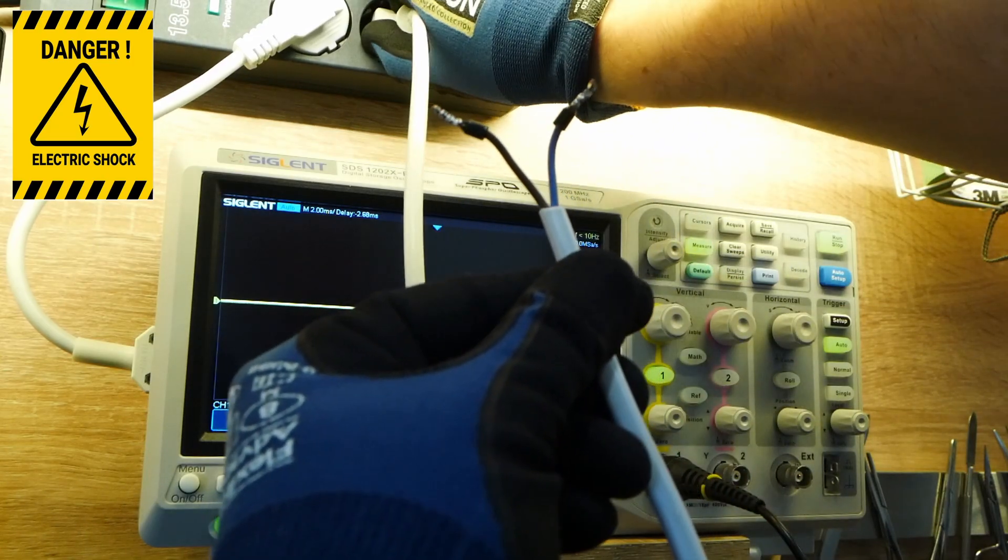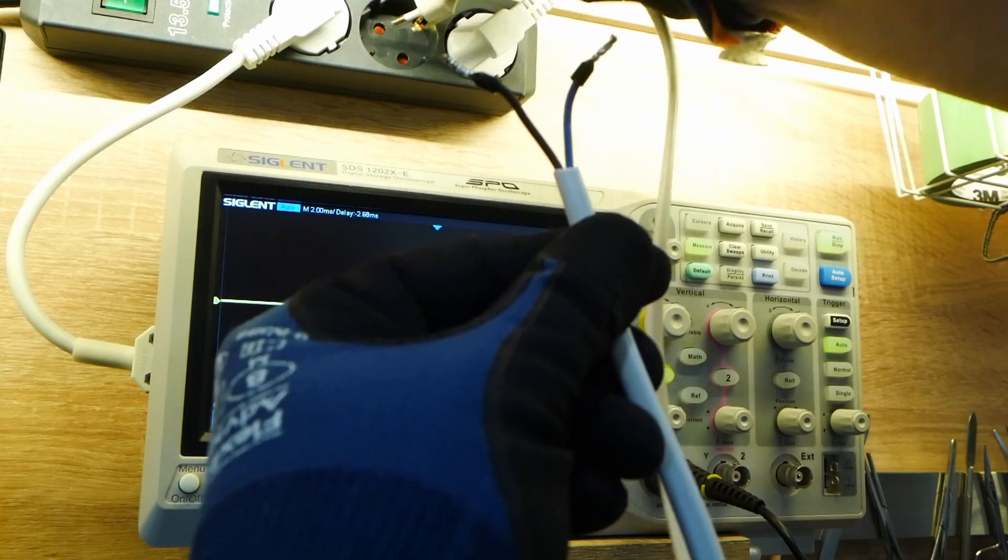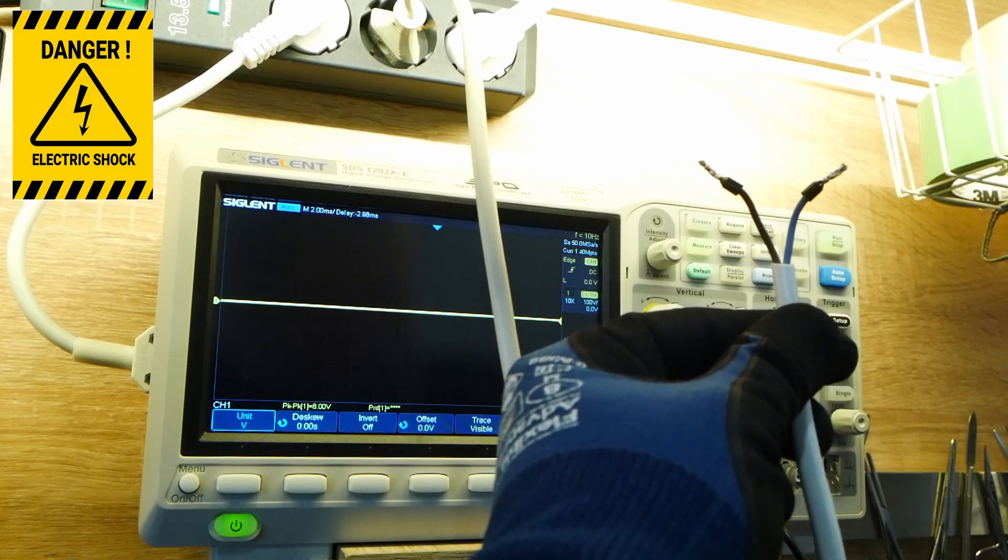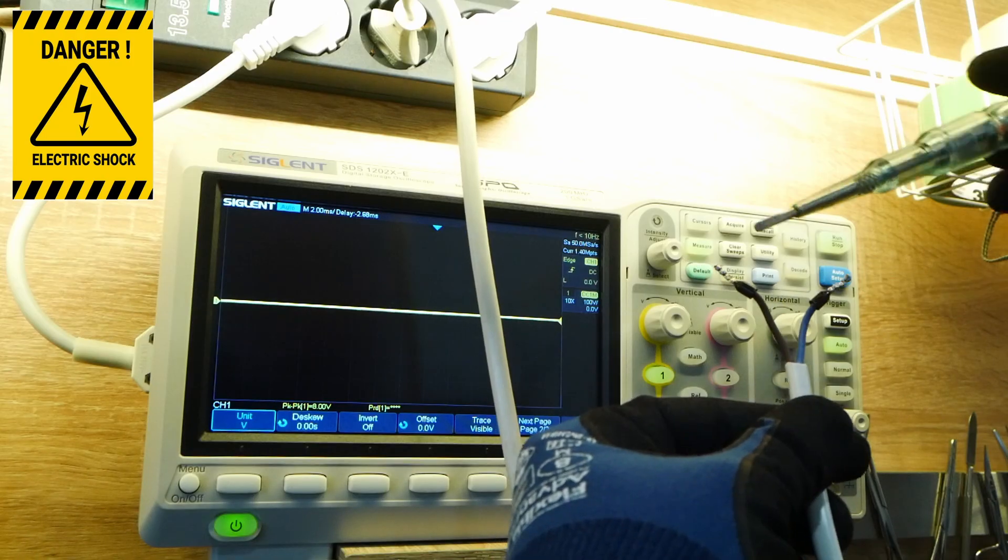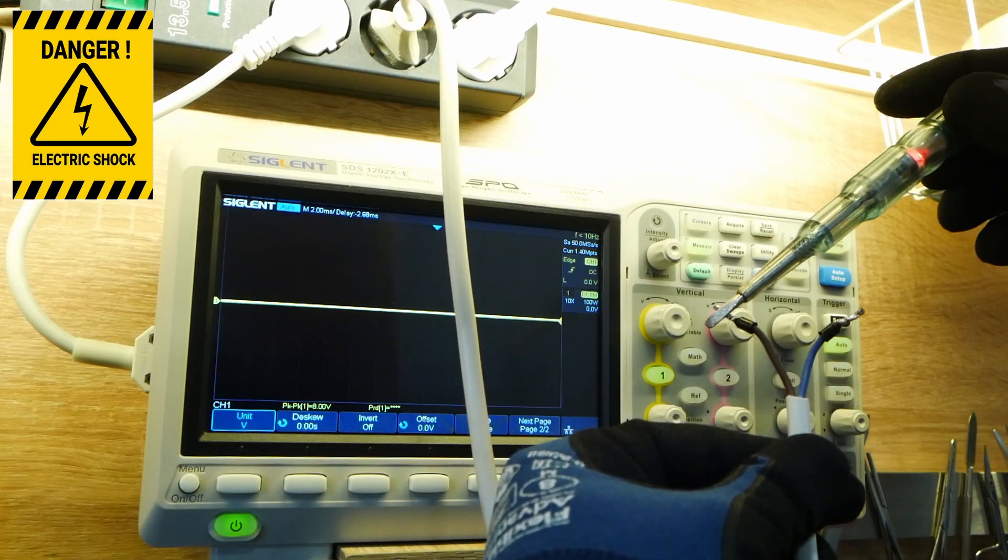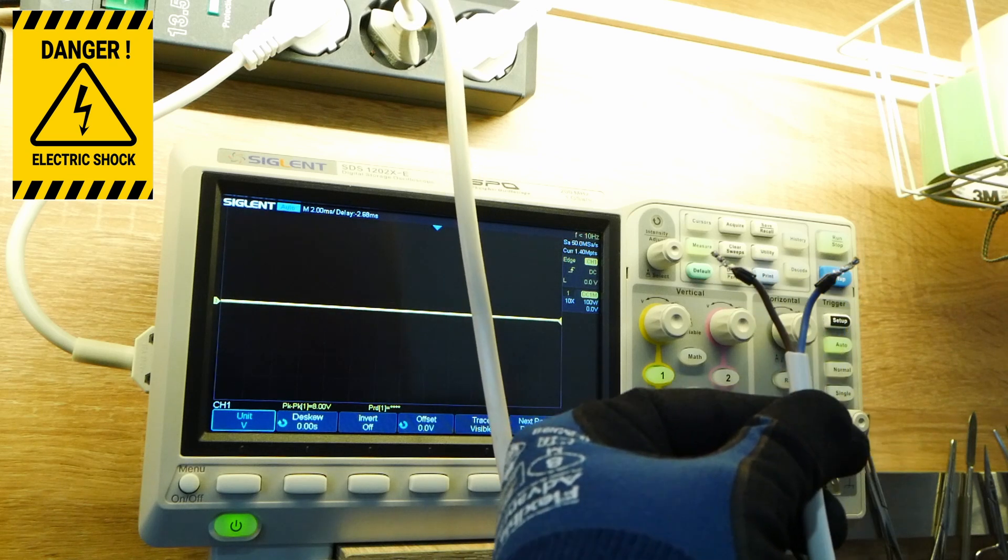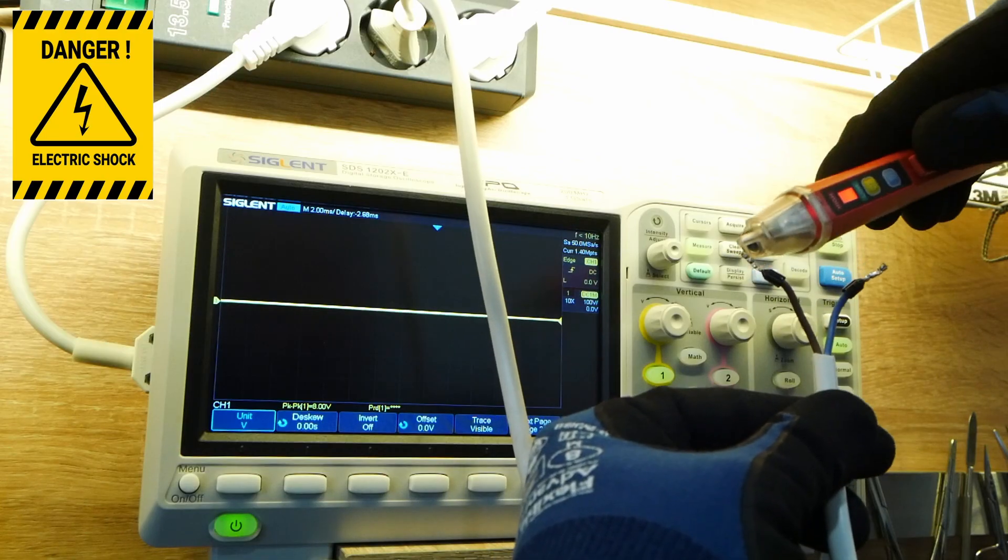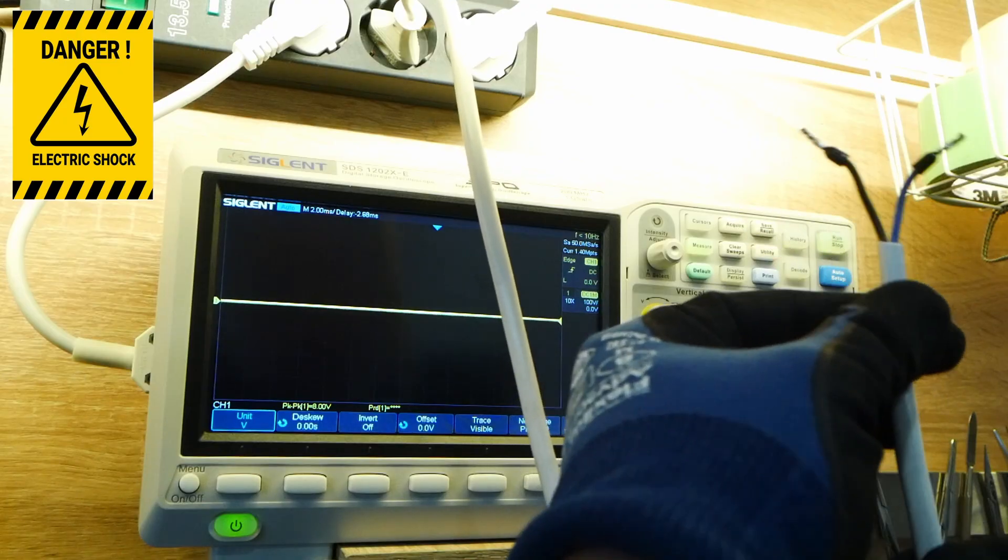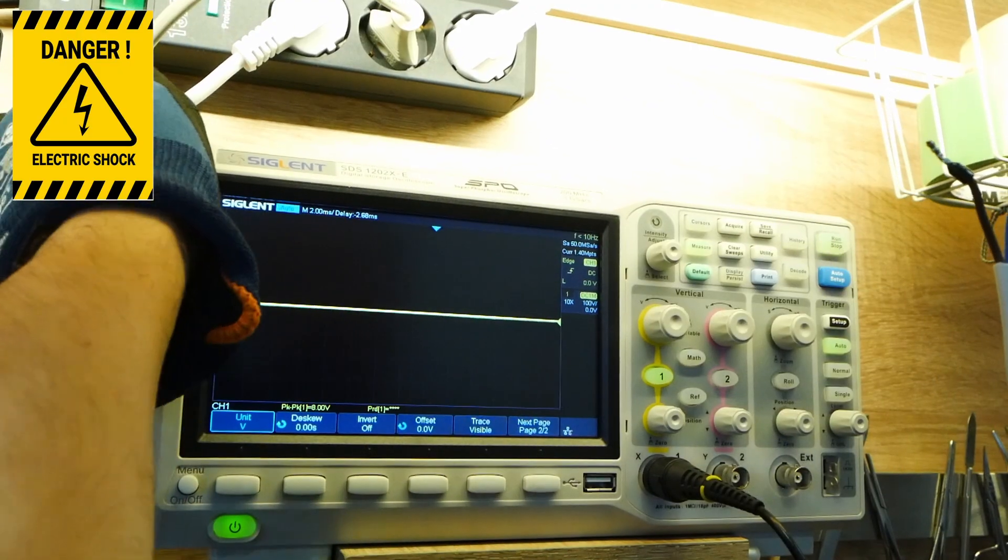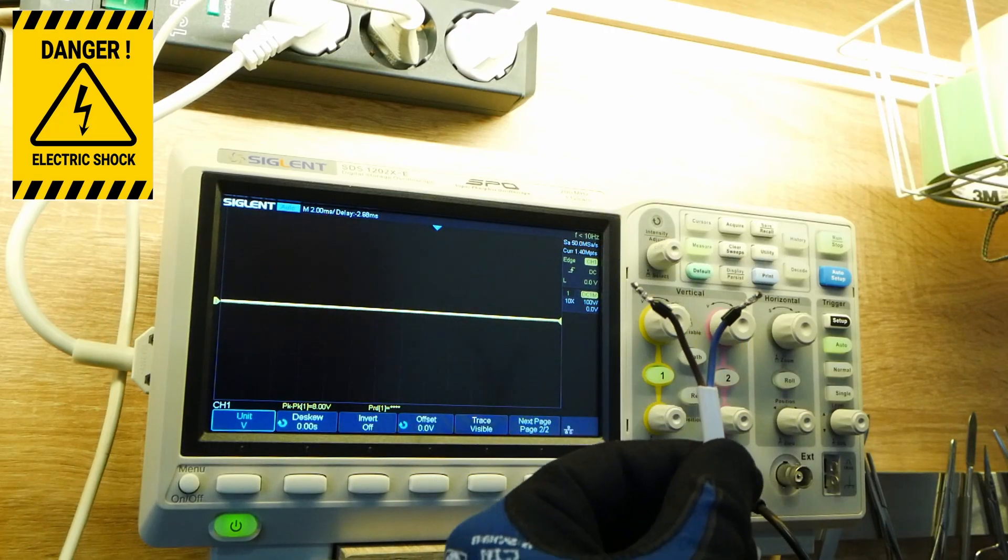So I will just change this cable in my electrical socket. So right now I have blue neutral, brown phase or live. Yes, we can check with this also one more time. Okay, so that is the case: brown is live, blue is neutral, and pretty much that's it.